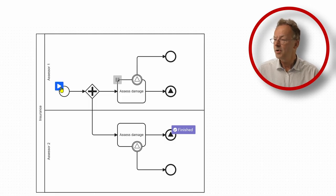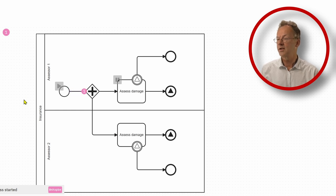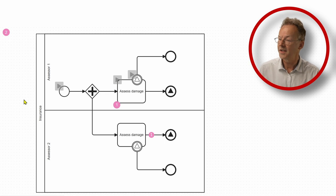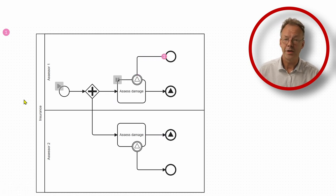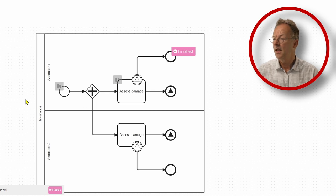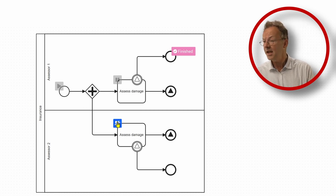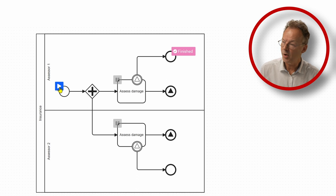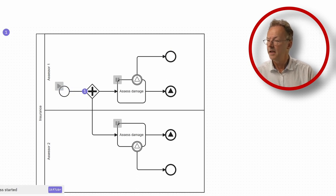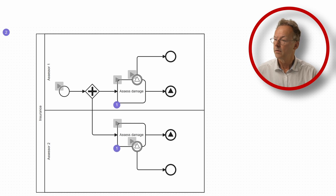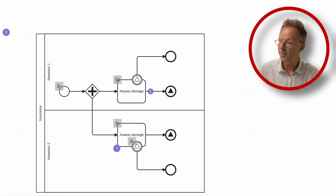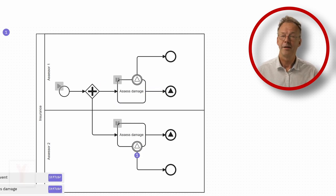So here we have two assessors, each of them has a swim lane. In the first case it's the second one who assesses the damage and the assess damage task of the first one is cancelled. And in the second case it's the opposite. It's the second assessor whose task is cancelled by the first assessor. Thank you for watching.